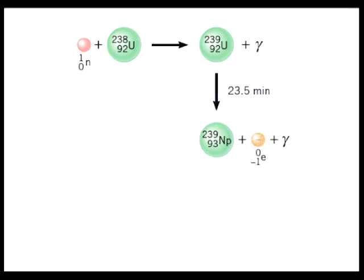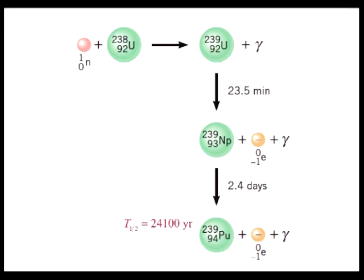Here we show a reaction that produces plutonium, with Z equal 94, from uranium, with Z equal 92. The process starts when a neutron is captured by a uranium-238 nucleus, producing uranium-239 and a gamma ray. The uranium-239 nucleus is radioactive and decays with a half-life of 23.5 minutes into neptunium-239. Neptunium is also radioactive and disintegrates with a half-life of 2.4 days into plutonium-239. Plutonium is the final product and has a half-life of 24,100 years.